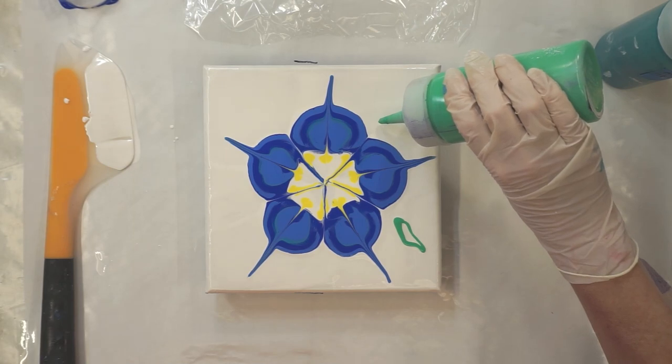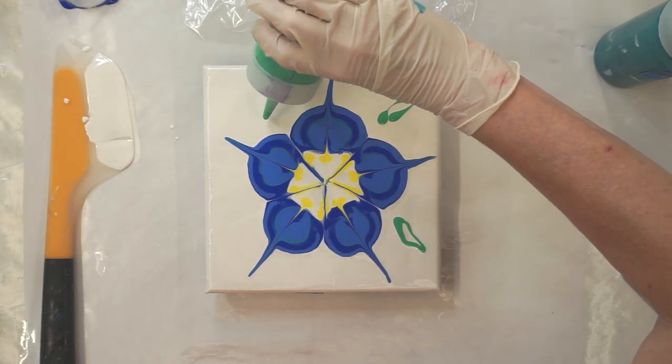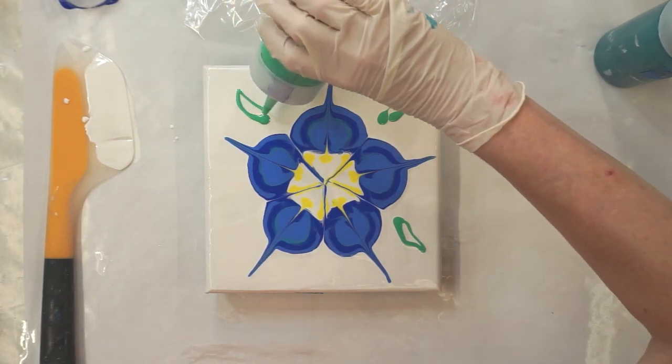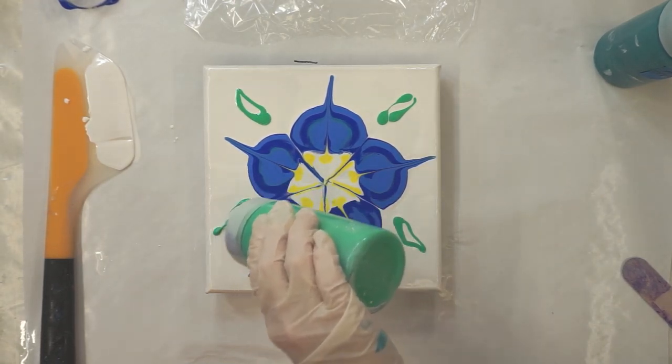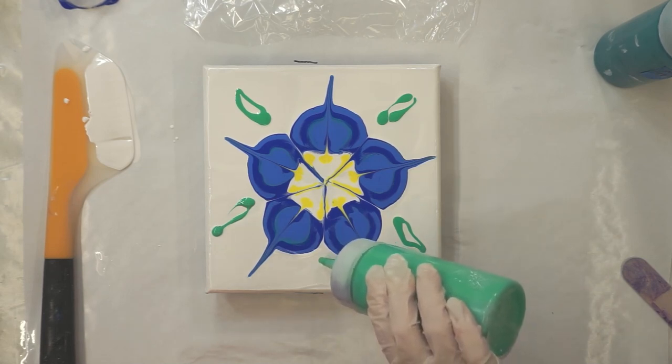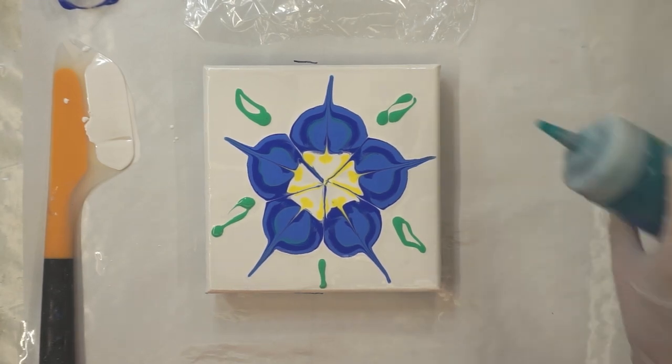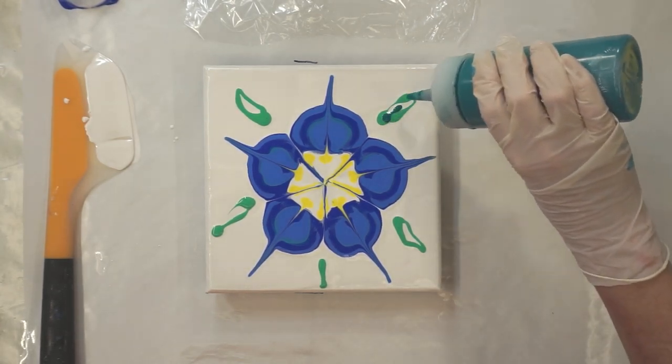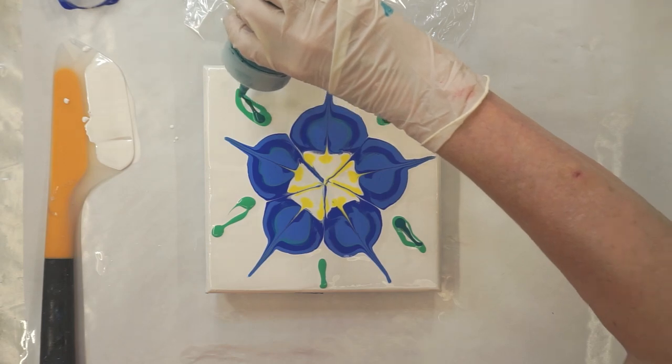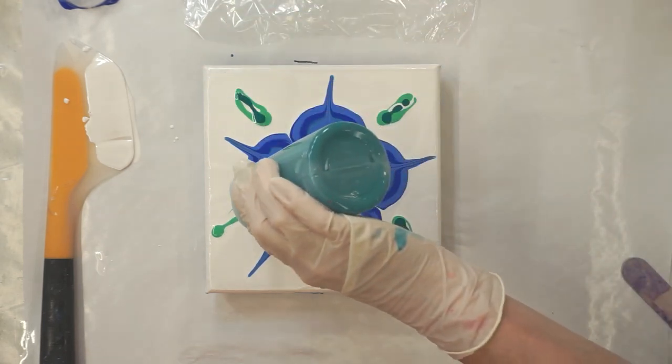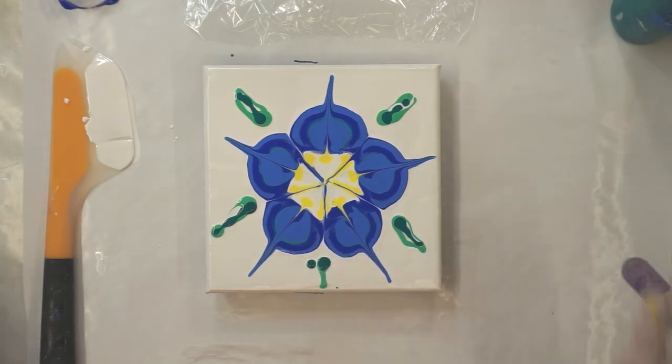So I'm going to put a little bit of green on the outside edges just to give the idea of a leaf. And that's an emerald green, and I'm going to go back in with some turquoise green just to add some depth.